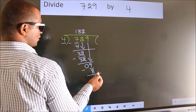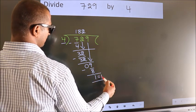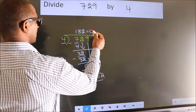No more numbers to bring it down. So we stop here. This is our remainder. This is our quotient.